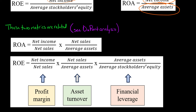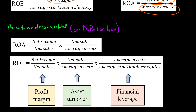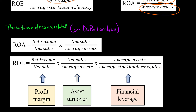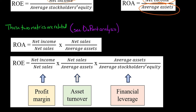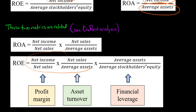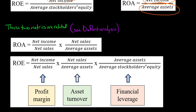If we take those same two things — profit margin and asset turnover — and then multiply by a third thing, financial leverage (average assets divided by average stockholder's equity), you get return on equity. So profit margin and asset turnover are common to both equations. The only difference is that with ROE, we multiply them by financial leverage. This means ROE is equal to ROA times financial leverage.